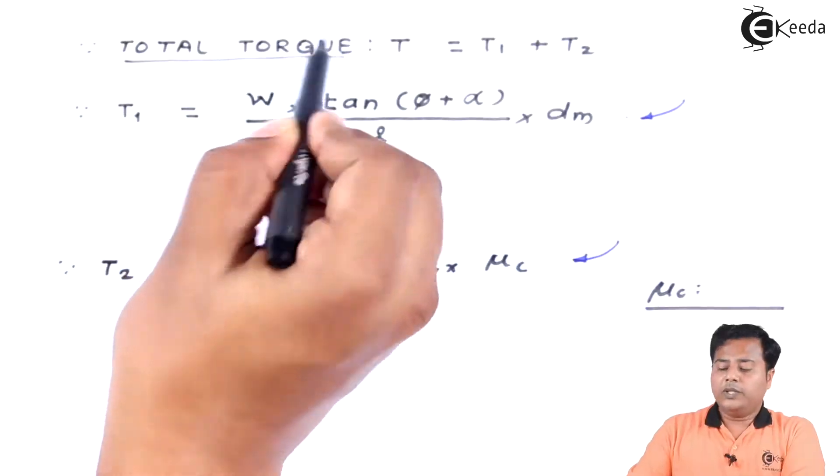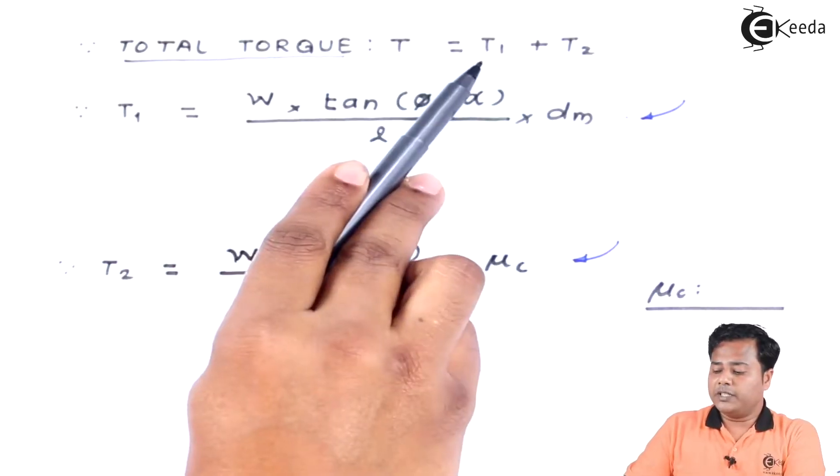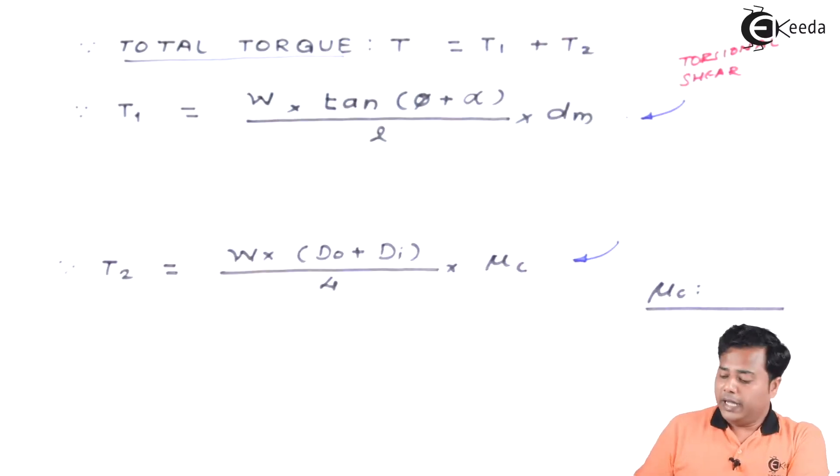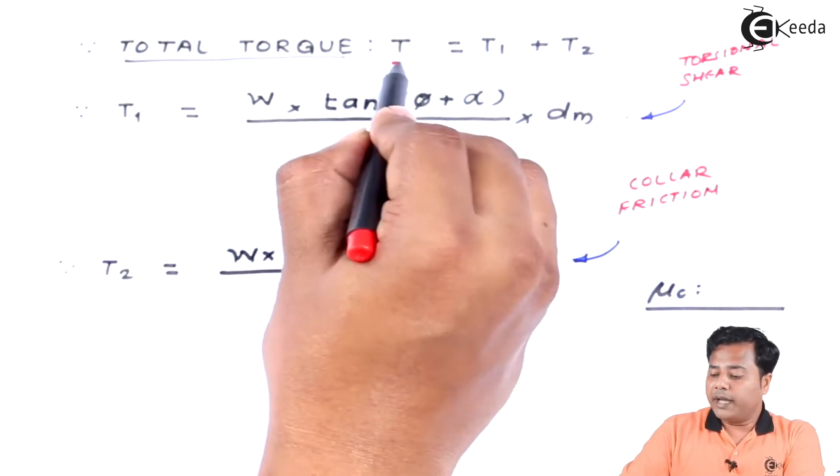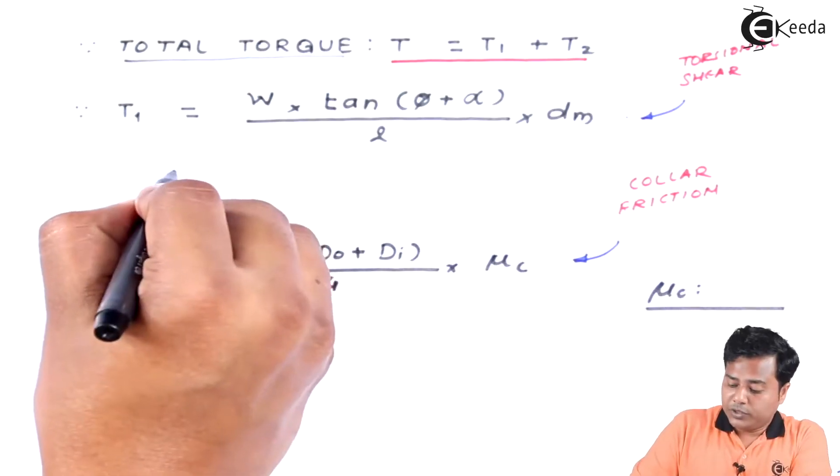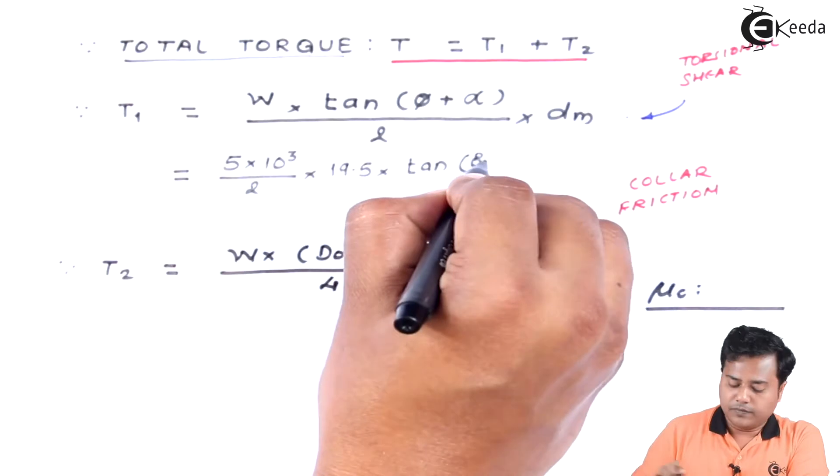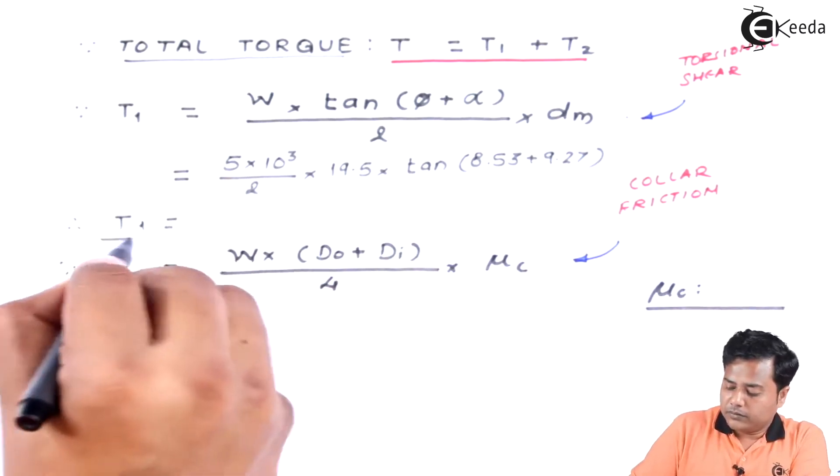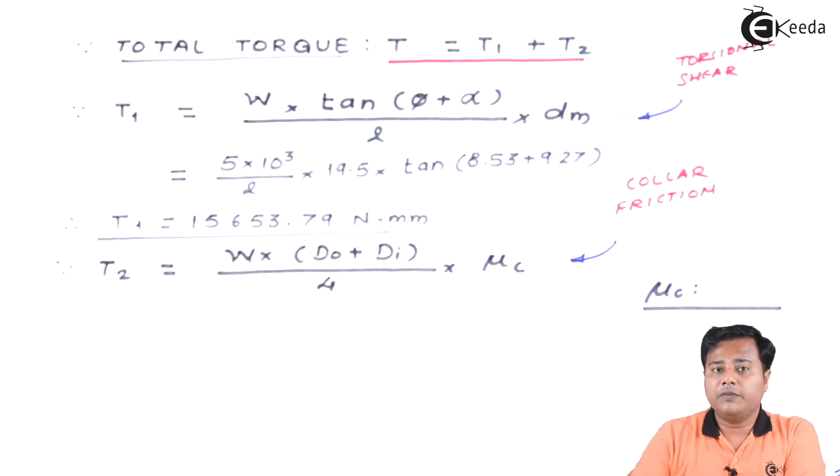Let us move ahead with the solution. We know that due to application of force in different manner and due to the structure or due to the dimensions of the given body, there is the differentiation of the torques which are going to act on this particular object. Let us name them as T1 and T2 where T1 is because of torsional shear and T2 is because of collar friction. As we add them, that is going to be the maximum value of torsion which is going to act on this particular assembly. Let us substitute the values. We know that it is 5 kilo newton. As we solve this expression, we will get the value of T1 as 15653 point something newton millimeter.